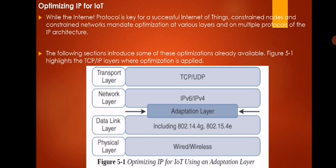Now we'll go for the optimizing IP for IoT topic, where we'll address solutions that lead us to fully implement IP concepts. While the internet protocol is key for a successful Internet of Things, constrained nodes and constrained networks mandate optimization at various layers and on multiple protocols of the IoT architecture. Resolving these two issues enables a successful IP and IoT architecture.